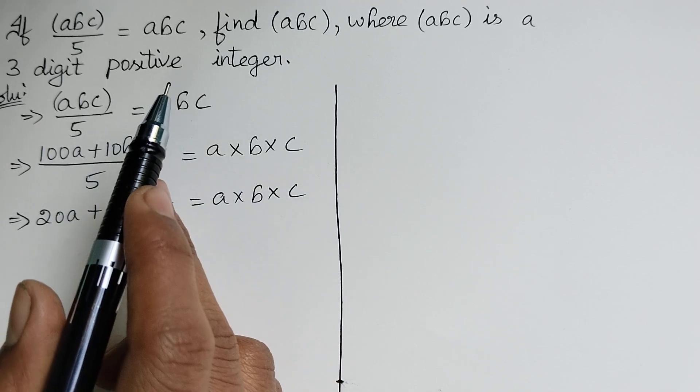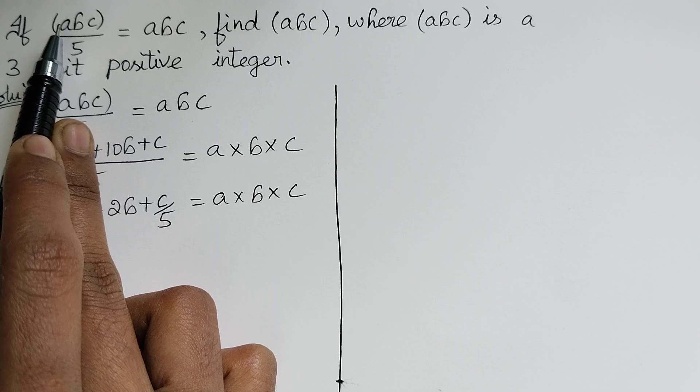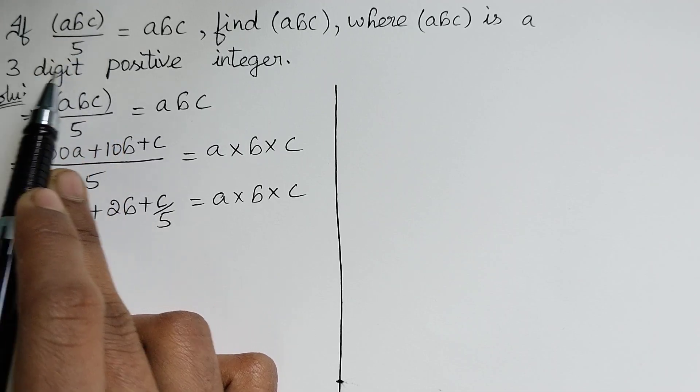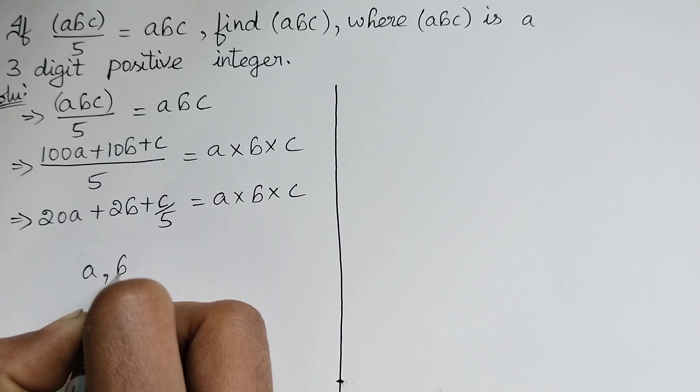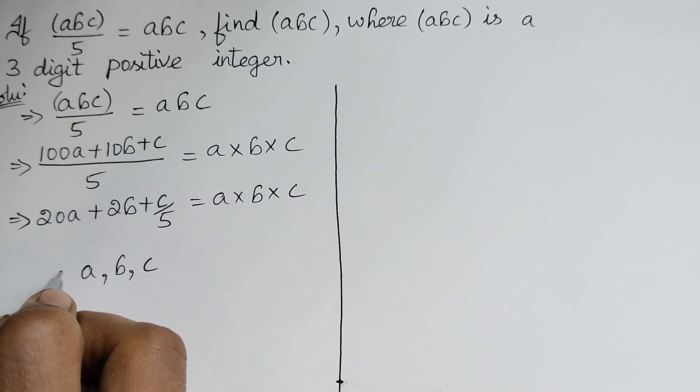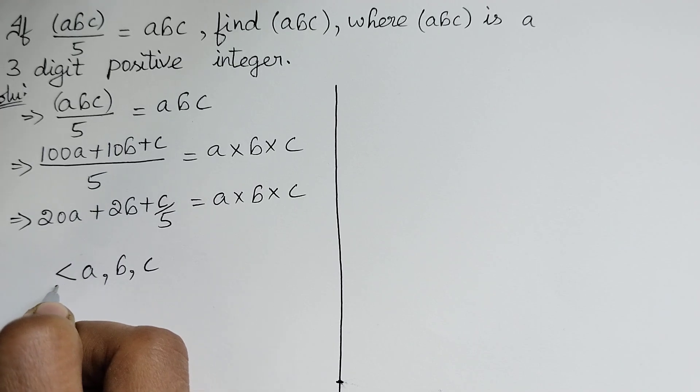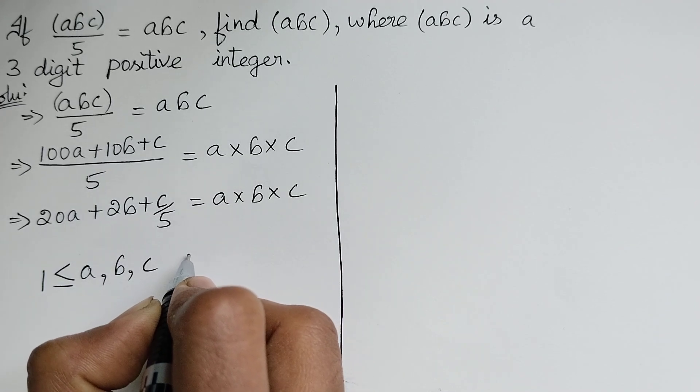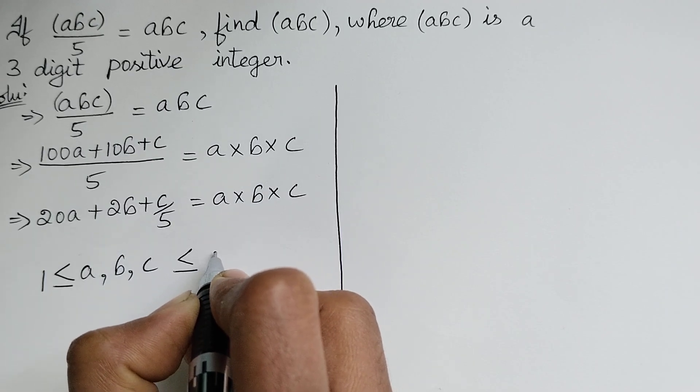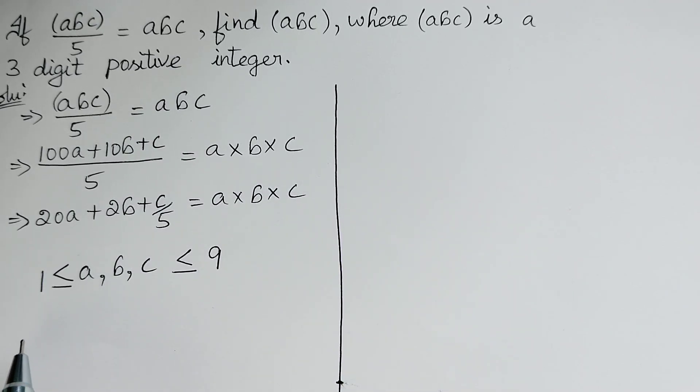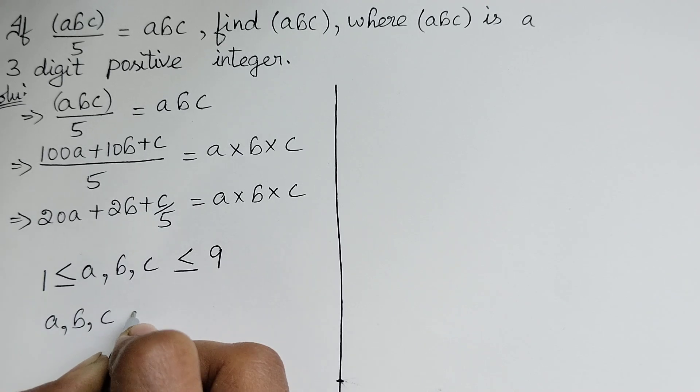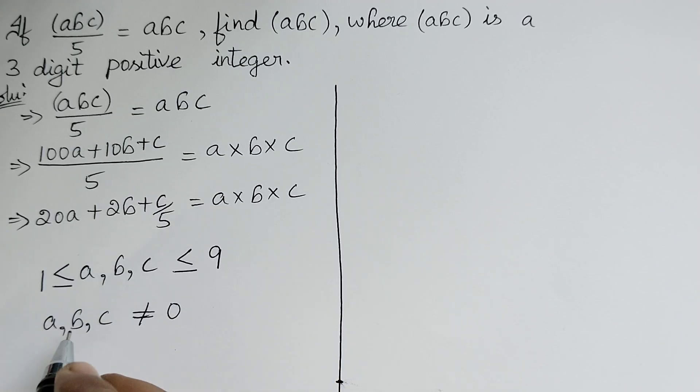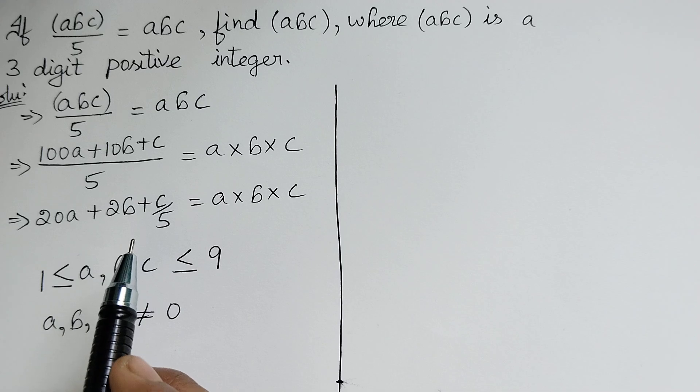Here, given that the term abc is a 3-digit positive integer, therefore a, b, c must be greater than or equal to 1 and less than or equal to 9. And it is clear that a, b, c is not equal to 0 because if any one digit is 0 then we will not get the unique answer.